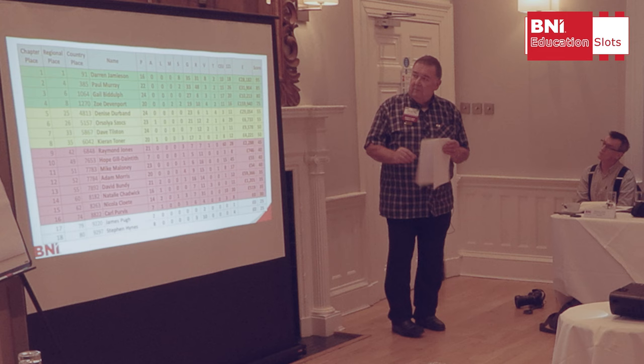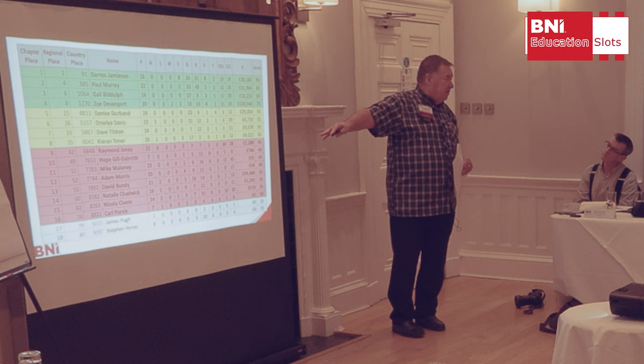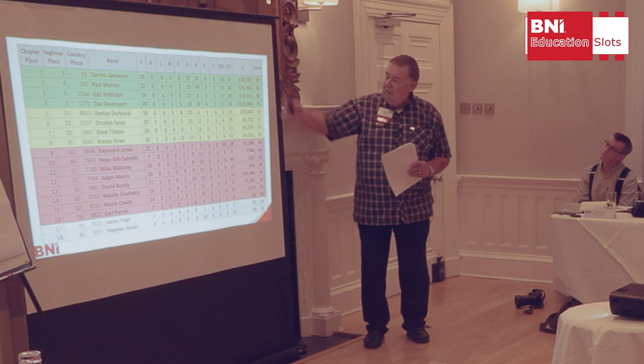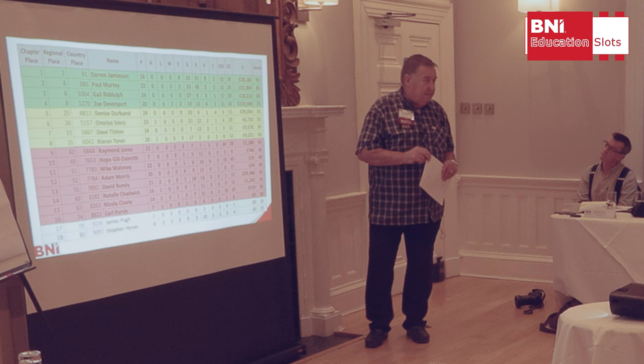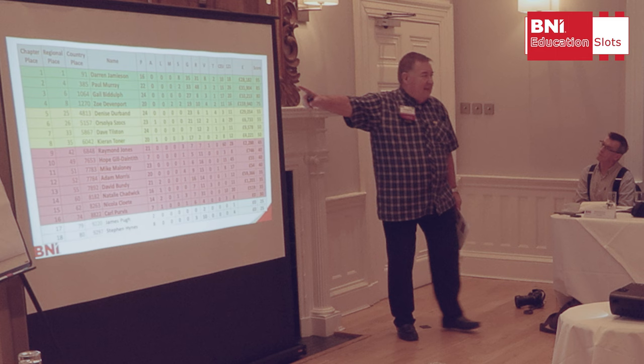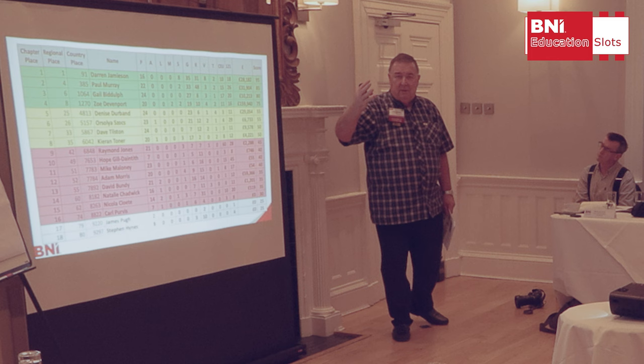If we put up our traffic lights for our chapter — these are from December 31st, measuring the last six months of last year — you can see we've got four members in green at the top, four members in amber, two members in grey, and a number of people in red. The columns across the top are PALMS: P for present, A for absence, L for late, M for medical absence, S for substitute. The score in each column shows how many times in the last six months you've done those things.